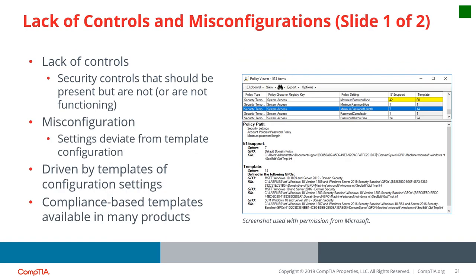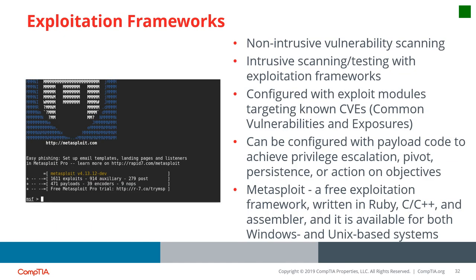Vulnerability scanning also identifies misconfigurations such as lack of security controls, use of default passwords, template configurations not changed in the system, and incorrectly configured access lists or security policies. Exploitation frameworks are software packages containing reliable exploit modules and features used for exploiting a given system. One popular example is Metasploit, a free exploitation framework written in Ruby, C++, and Assembler, available for both Windows and Unix. Students will use Metasploit in the penetration testing course.